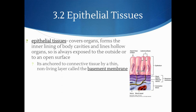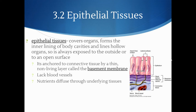Epithelial tissue is anchored to connective tissue by a thin, non-living layer called the basement membrane. The basement membrane is visible as a purple layer, with epithelium cells on top of it. Epithelial tissues lack blood vessels — the basement layer may have some blood vessels providing nutrients, but those don't go all the way up to the epithelium layer. The nutrients diffuse through the underlying tissues, from blood vessels up to feed the layers above.